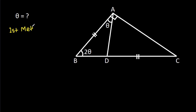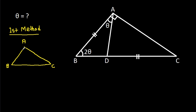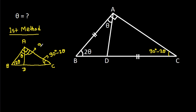The first method: in triangle ABC, this angle is 90 degrees and this angle is 2 theta. So this angle will be 90 degrees minus 2 theta. And we have angle BAD is theta, so this angle will be 90 degrees minus theta.